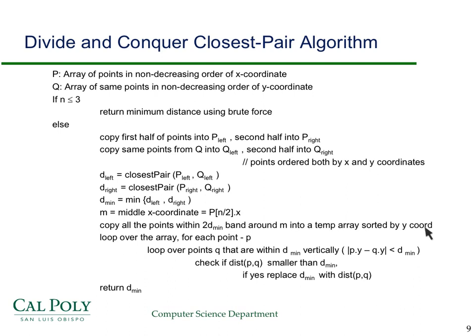Then we loop over the array for each point P and we only loop over the points Q that are within d_min vertically. In other words, we only look at the difference in the y-coordinates between P and Q. Then we check to see if the distance is smaller. If it is, we replace d_min with that. The crucial question here: everything is going to be linear except potentially how many points are there vertically less than d_min away from the given point P. I need to show that that's a small constant.